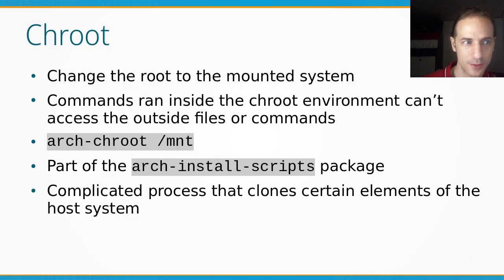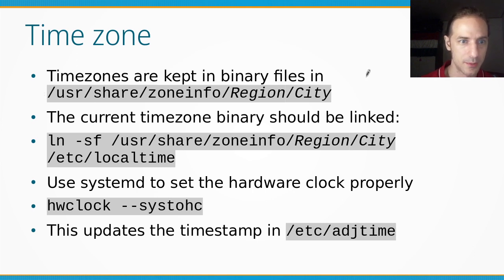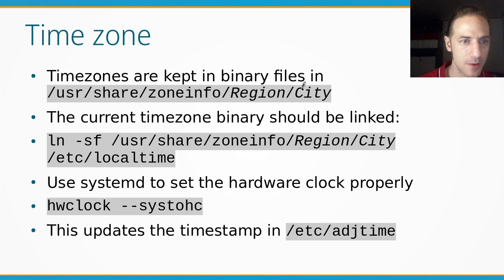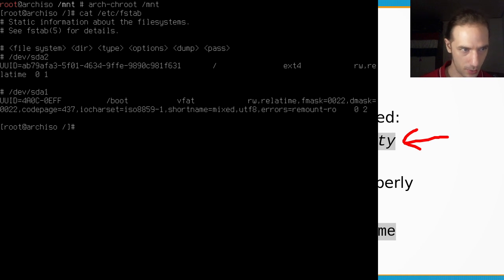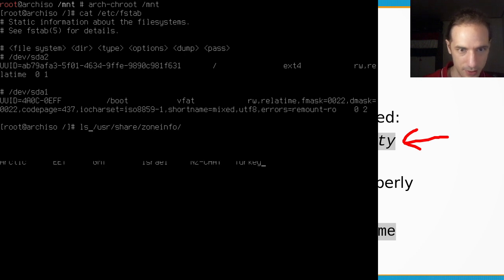We're going to use this chroot environment to configure our new system in many ways, the first of which is the timezone. We've had some discussion about timezones and timekeeping in Linux in a previous video. The timezone files are kept in directories based on region. We will create a symbolic link to the proper timezone at /etc/localtime. This is our first command in the chroot environment. Let's run: ln -sf /usr/share/zoneinfo — and if you're not sure what's in there, you can list it.